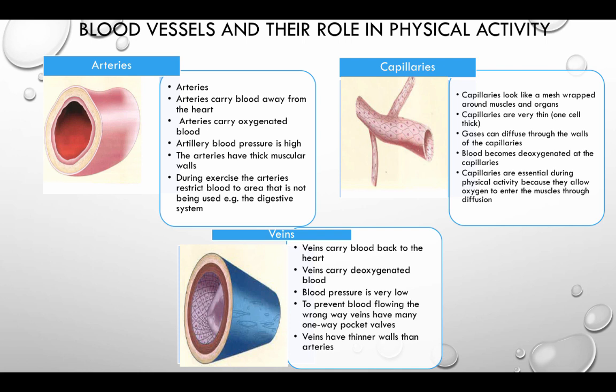Veins carry blood back to the heart. Veins carry deoxygenated blood. Blood pressure is very low to prevent blood flowing the wrong way. Veins have many one-way pocket valves. Veins have thinner walls than arteries.